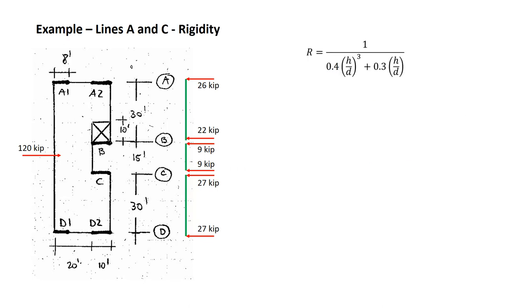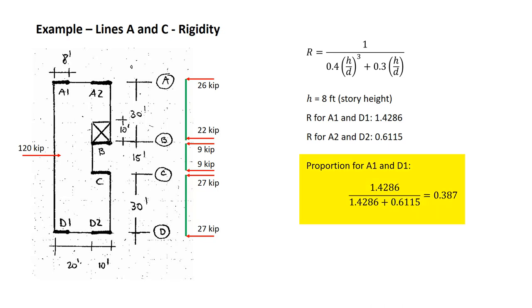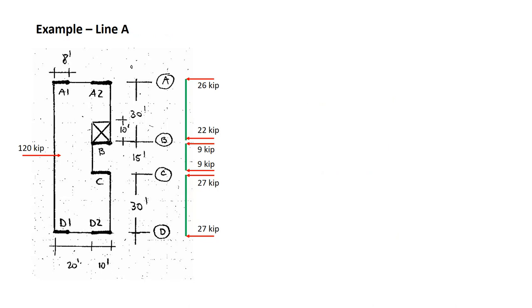Recall this equation for the rigidity that we saw in a previous video. This example has 8 foot story heights, and if we take then the lengths of 8 feet and 10 feet for these walls to plug into D, we can calculate the rigidity values that are shown here. Each of the walls will attract load in proportion to their rigidity. So walls A1 and D1 will attract 39% of the load as shown here. Walls A2 and D2 will attract 61% of the load. In other words, the 26 and the 27 kips along grid lines A and D will be divided 39% and 61% to the respective walls.